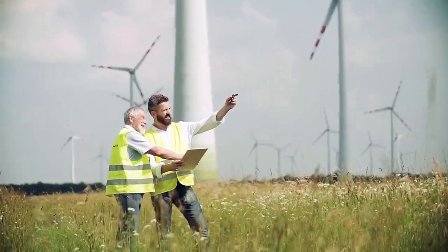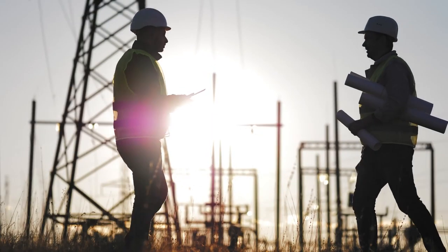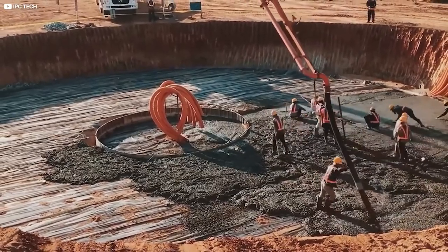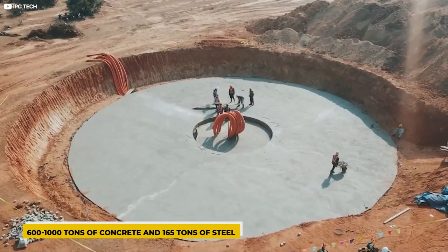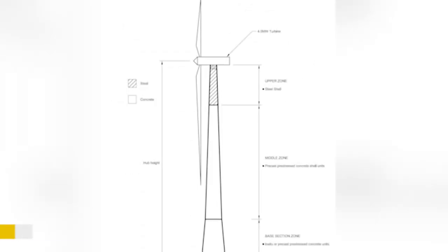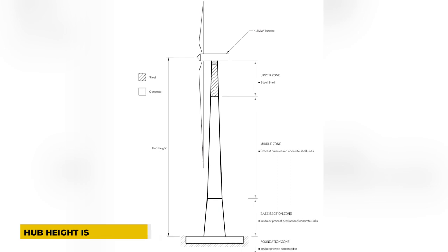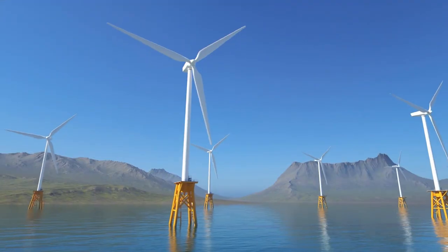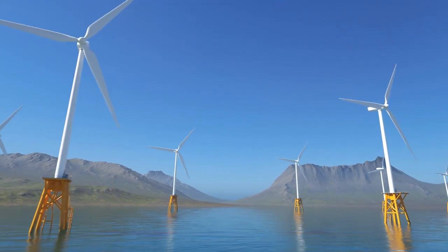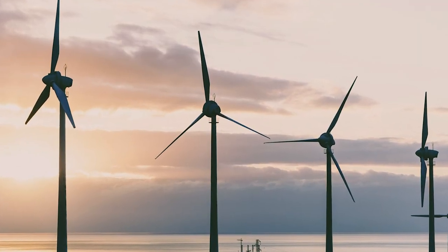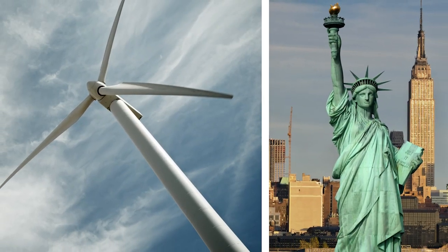Once the area is determined, it's time to construct the tower. Once the developer has selected a location for the onshore turbine tower, we will prepare the ground and build a concrete foundation that can use up to 600 to 1,000 tons of concrete and 165 tons of steel. Hub height is determined — the distance from the ground to the center of the turbine rotor. Hub height increased 66% from 1998 and will reach approximately 94 meters or 308 feet by 2021, as tall as the Statue of Liberty.